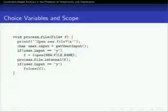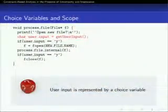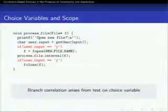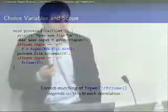Let's be concrete with this process_file function. It takes a file pointer F from the user, then asks the user if they would like to open a new file. If yes, it reassigns F to the result of a new fopen call. It then calls process_file_internal with that file pointer F, and if the user chose to open a new file, it closes it before returning. The user input here will be represented by a choice variable, since we can't predict what the user will input at static analysis time. This function has a branch correlation on that choice variable user_input — and if you're interested in verifying whether the fopen and fclose calls match up, you have to track this branch correlation, so it's clearly useful within that function.